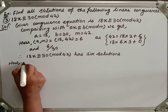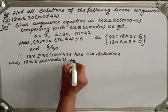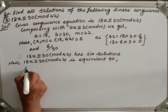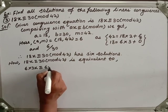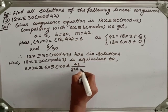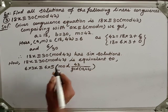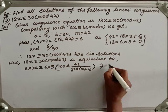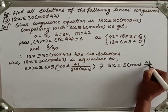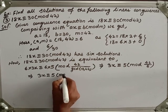Now, 18x ≡ 30 (mod 42) is equivalent to 6×3x ≡ 6×5 (mod 42/GCD(18,42)), which gives us 3x ≡ 5 (mod 7). Note that the solution of 18x ≡ 30 (mod 42) is also a solution of 3x ≡ 5 (mod 7).